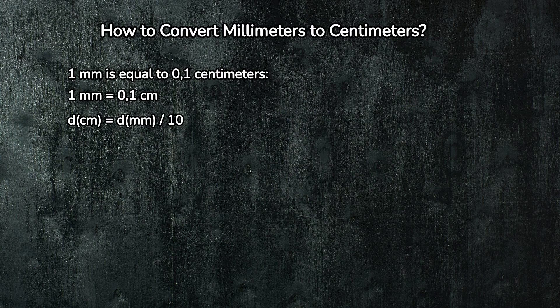Alright, here's the golden rule: 1 centimeter equals 10 millimeters. Simple, right? So, to convert millimeters to centimeters, you just divide the number of millimeters by 10.